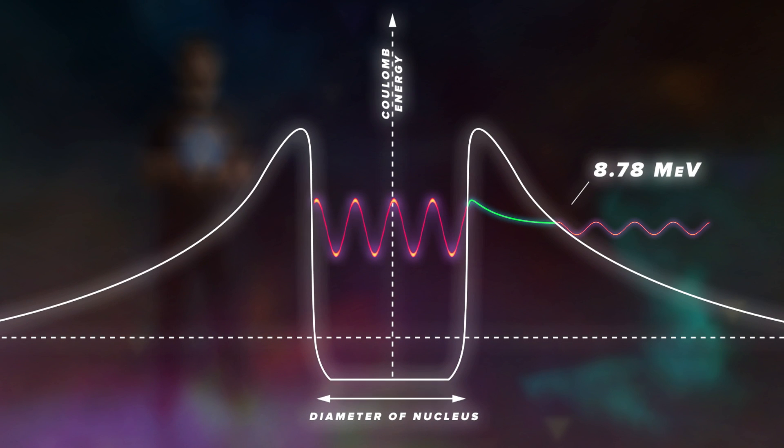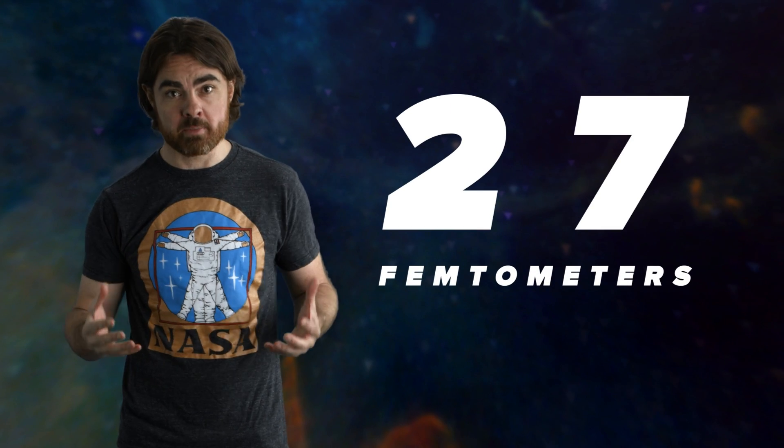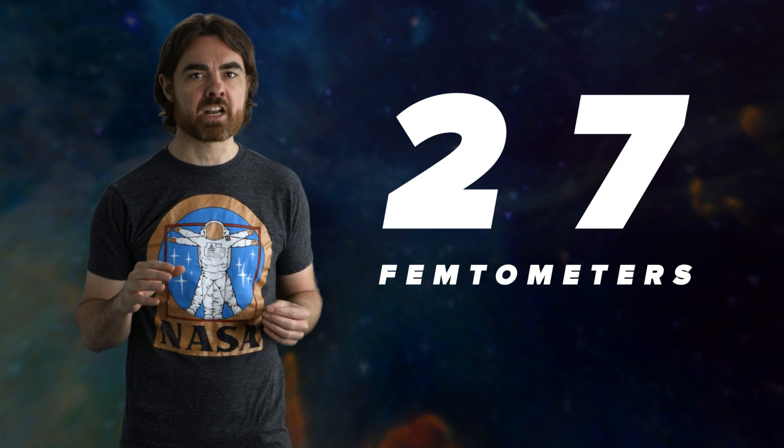And the extra credit question asked, what physical distance does the alpha particle actually tunnel? For this, you needed to calculate how far from the center of the nucleus the Coulomb potential of the nuclear protons reaches the 8.78 mega electron volts of the alpha particle's kinetic energy. The answer is 27 femtometers. So how far did the alpha particle tunnel?